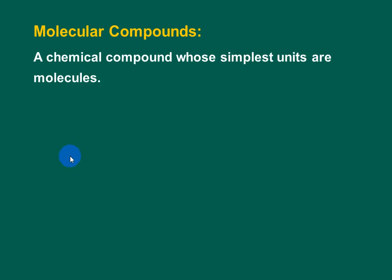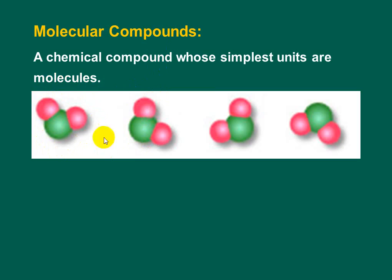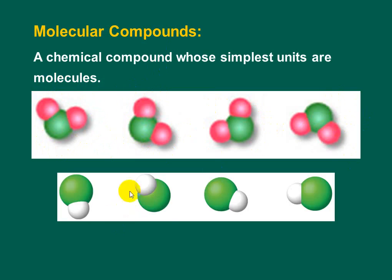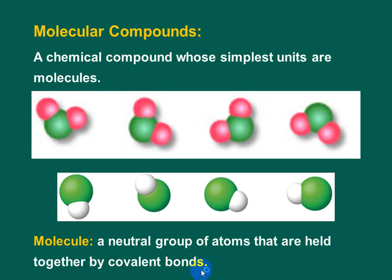Molecular compounds are chemical compounds whose simplest units are molecules. When a compound consists of separate units, each called a molecule, they are called molecular compounds or covalent compounds. A molecule is a neutral group of atoms — not positive nor negative — held together by covalent bonds through the sharing of electrons.